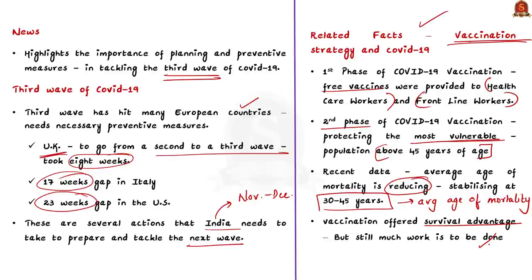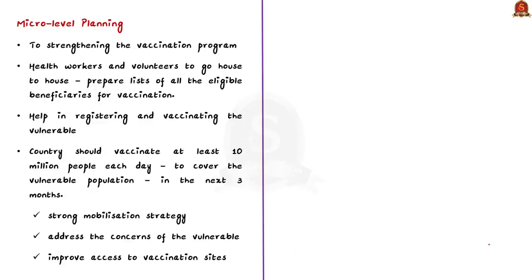The author advises health workers and volunteers to go house to house and prepare list of all the eligible beneficiaries for vaccination. Next, efforts should be made to help in registering and vaccinating the vulnerable. We should vaccinate at least 10 million people each day to cover the vulnerable population in the next 3 months. This is a lofty goal. To reach this pace of vaccination, it is important to develop a strong mobilization strategy, address the concerns of the vulnerable, and improve access to the vaccination sites. Such focus on bottom-up micro planning can be helpful.